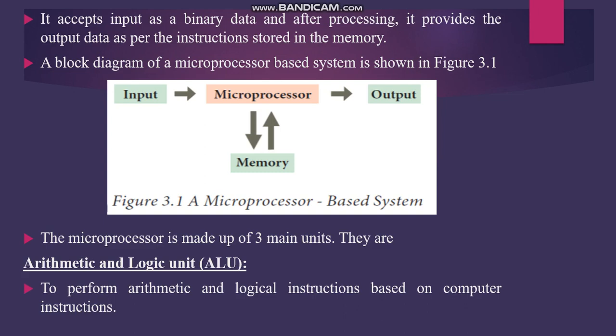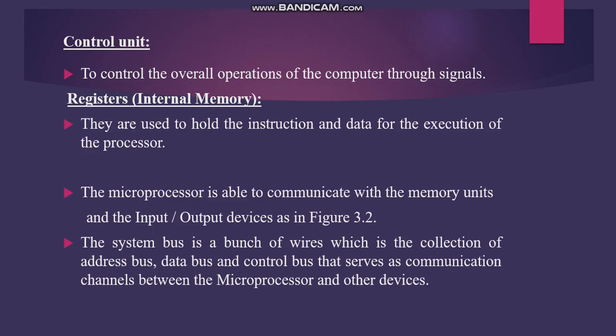The microprocessor has three main units. The first is the ALU — Arithmetic and Logic Unit — which performs either arithmetic or logical instructions. Arithmetic operations include addition, subtraction, multiplication, and division. Logical operations include AND, OR, XOR, and NOT. The second main unit is the Control Unit, which controls operations through signals. The third unit is Registers, which are internal memory used for temporary storage.